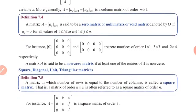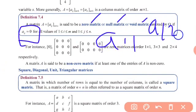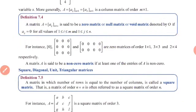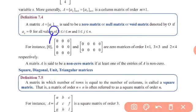Next is the zero matrix. A matrix is a zero matrix if all its entries are equal to zero for every i and j. That is, a11 = 0, a12 = 0, a13 = 0 — all entries are zero. Examples: a 1×1 zero matrix, a 3×3 zero matrix, and a 2×4 zero matrix.